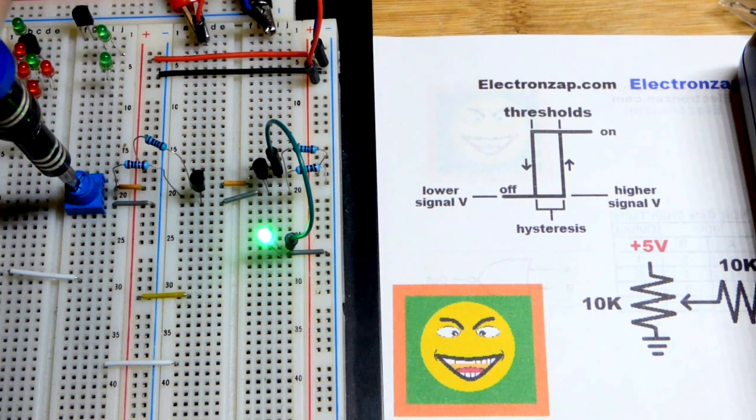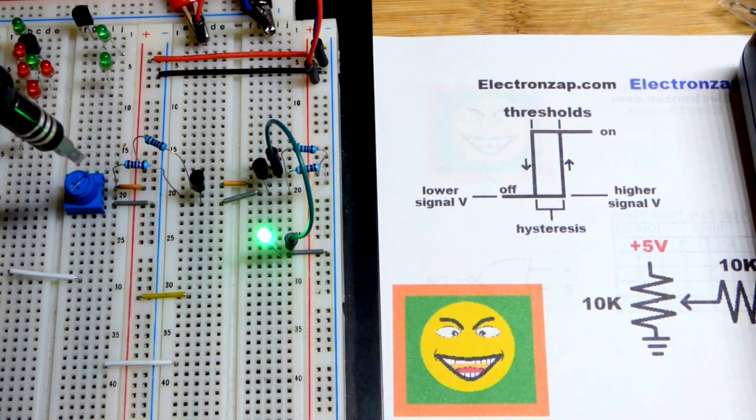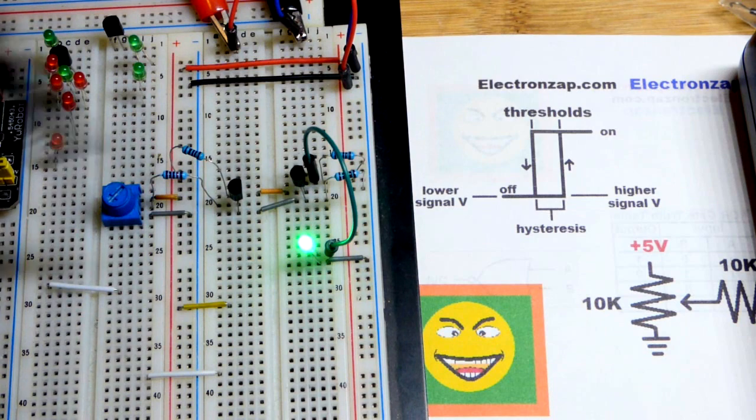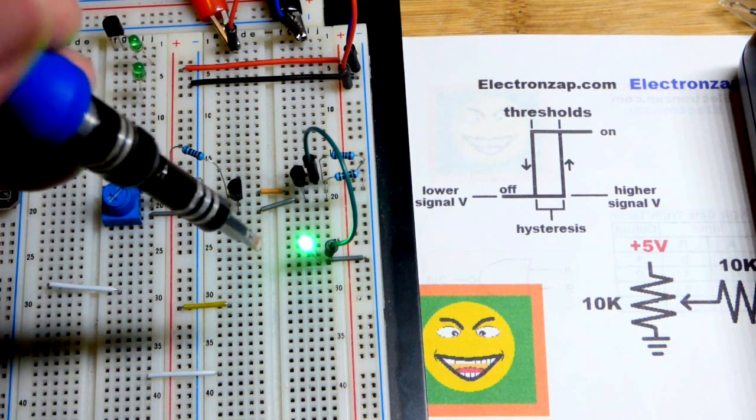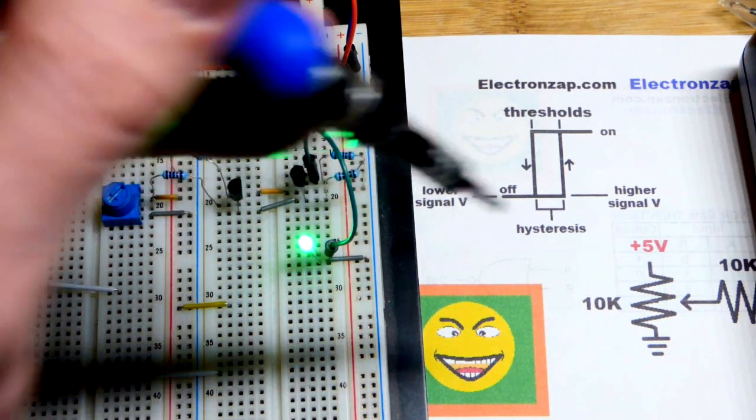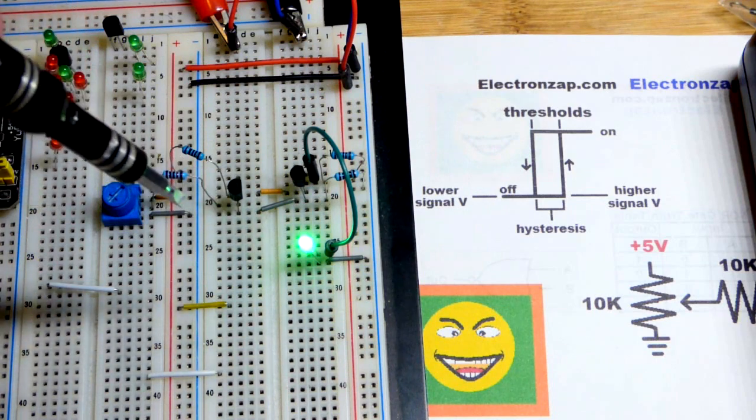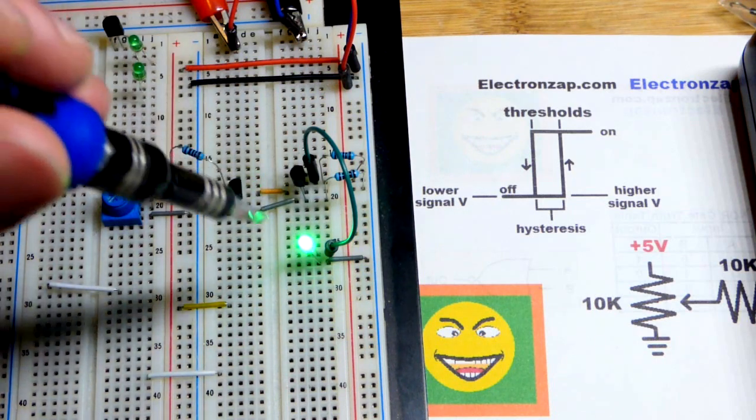As I said before, these trim pots when you stop they kind of bounce back a little bit the direction you came. So if you stop right where the LED turned off, if you don't have the Schmidt trigger, the hysteresis, it will bounce back and change the state of the LED accidentally.